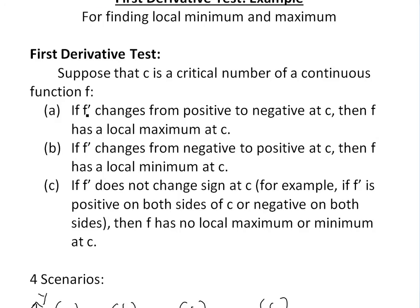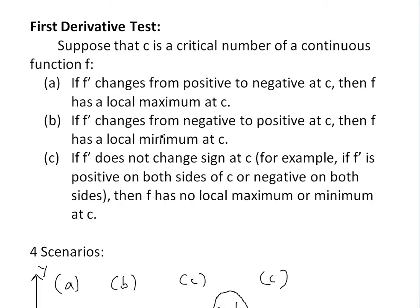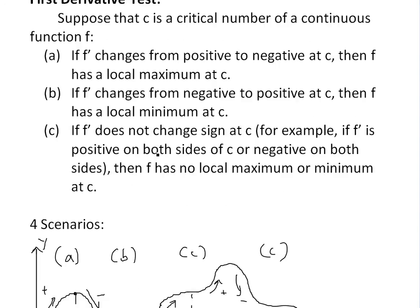Basically, if you have c as a critical number, then if the derivative changes from positive to negative at c, then f has a local maximum at c. If the derivative changes from negative to positive at c, then f has a local minimum. But if it does not change sign at c, then you do not have a local max or minimum.